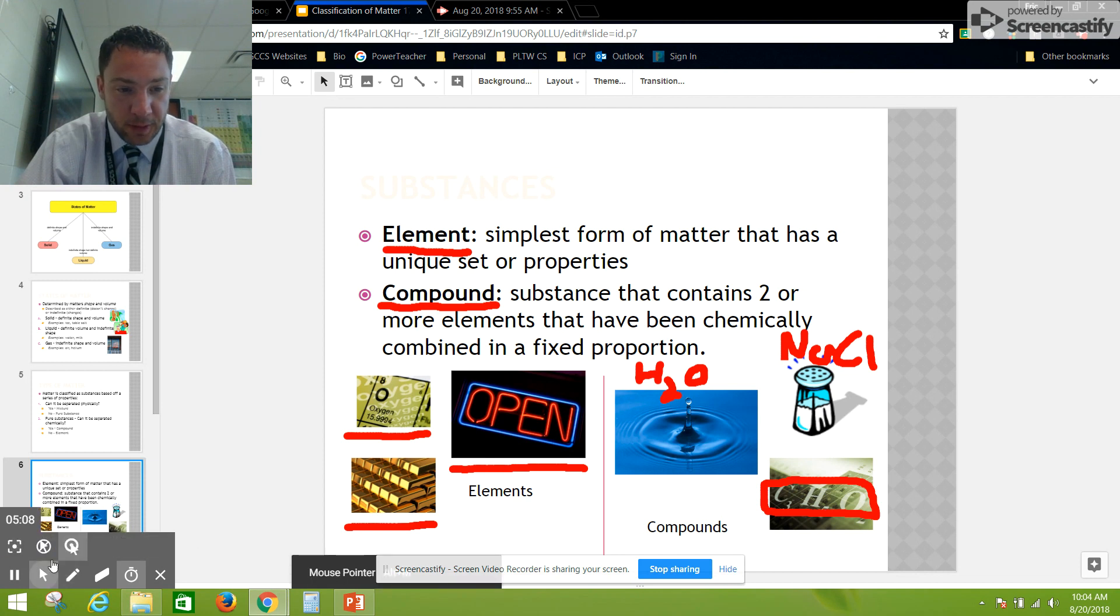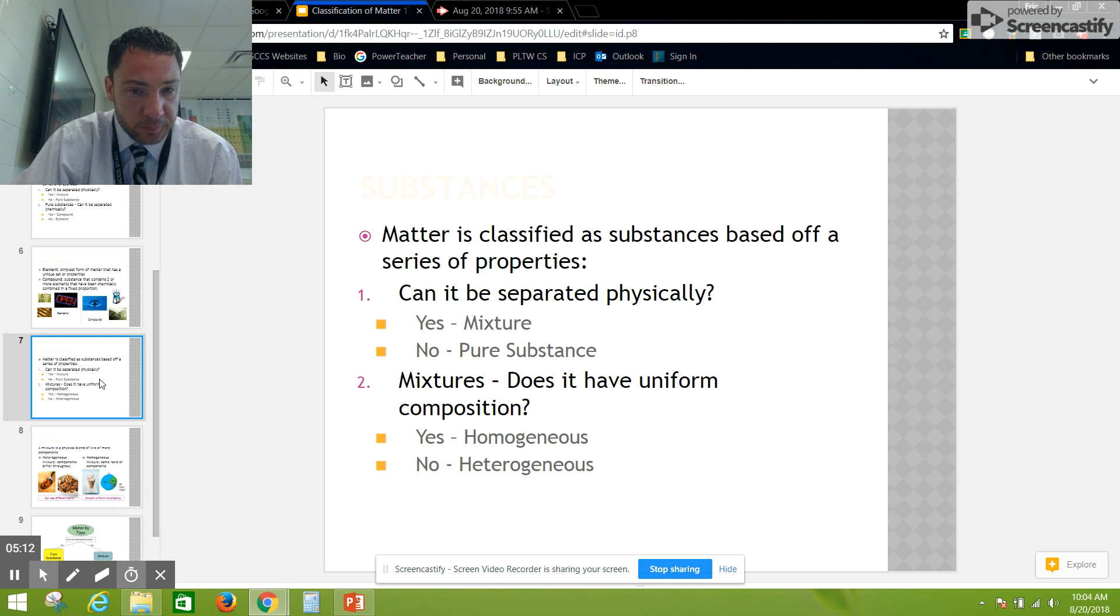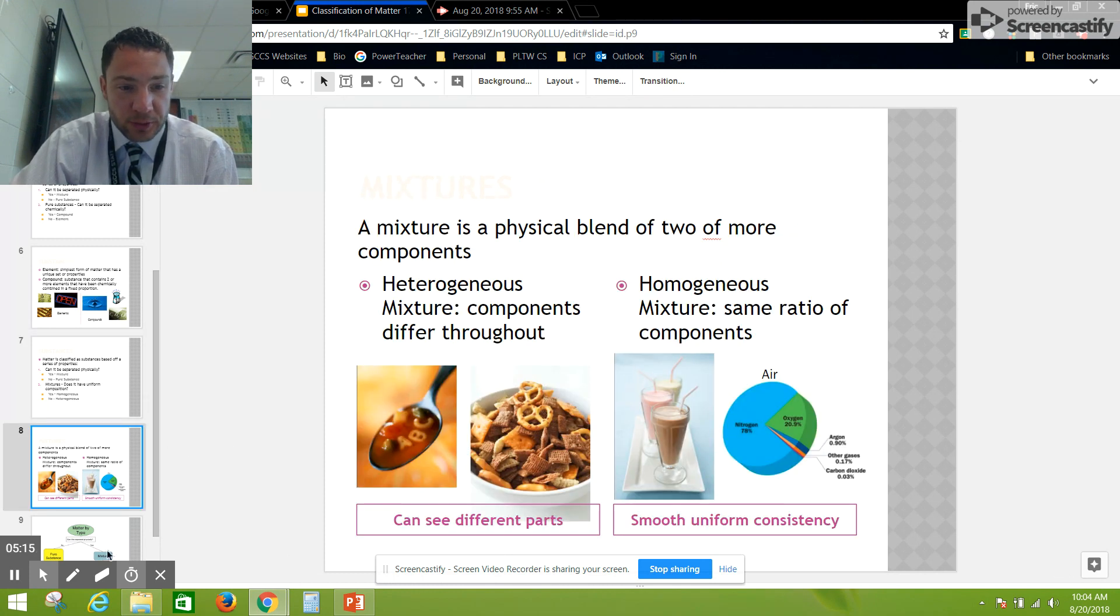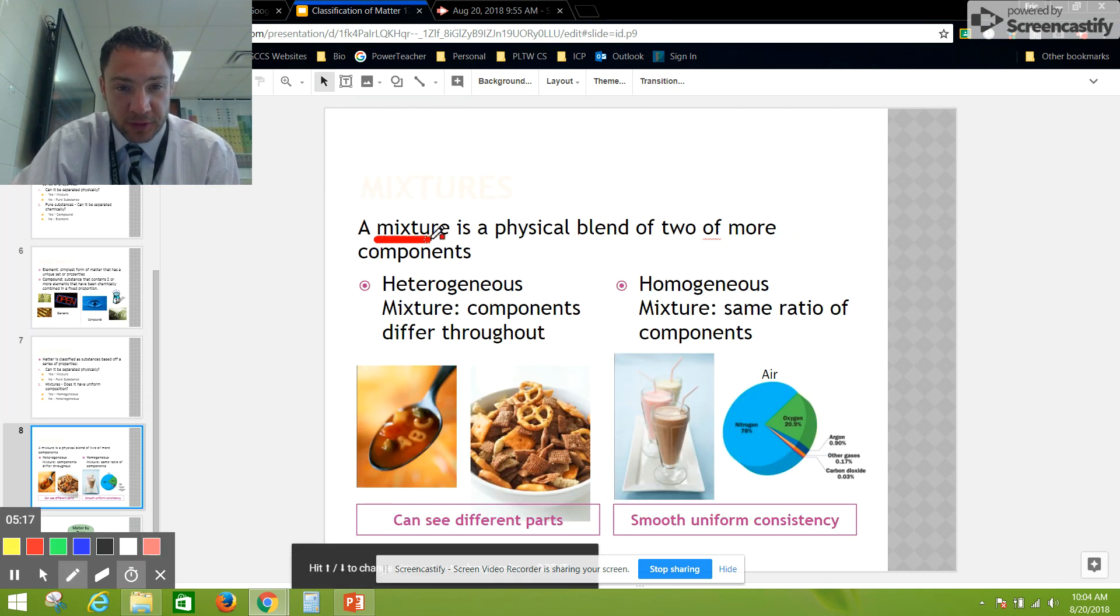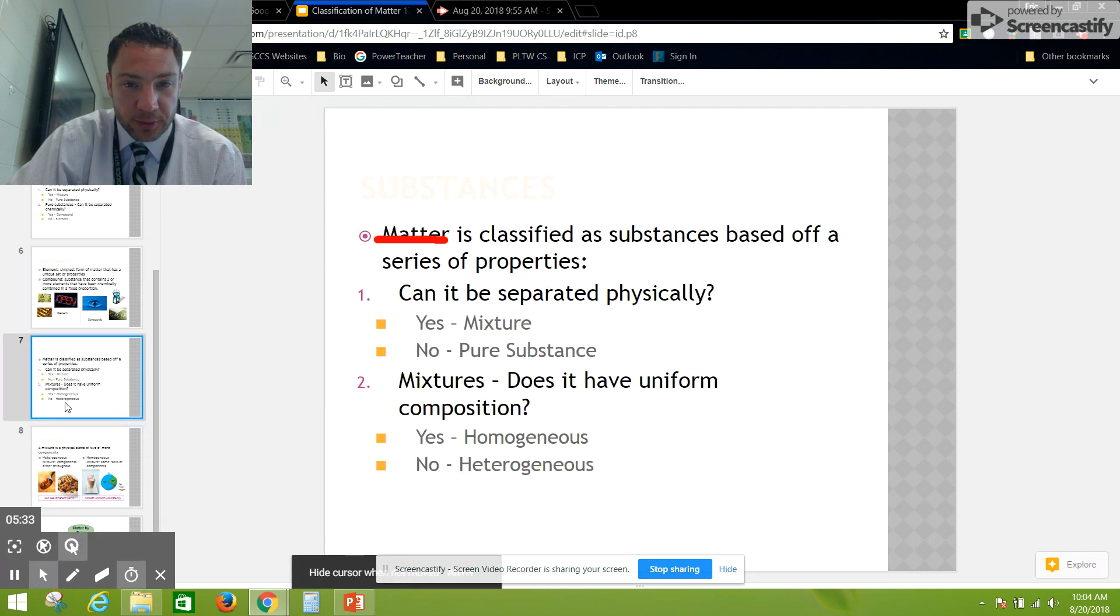A mixture is any type of matter that is a physical blend of two or more components. Think of components as another way of saying ingredients, the parts that make it up. There's two ways to separate mixtures.